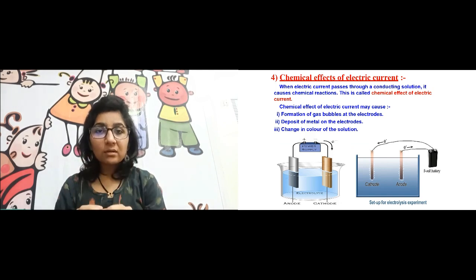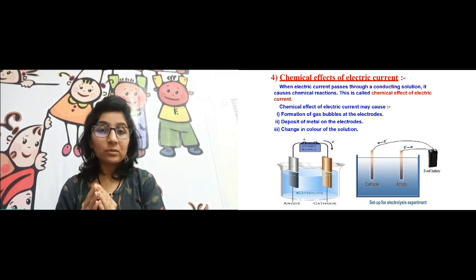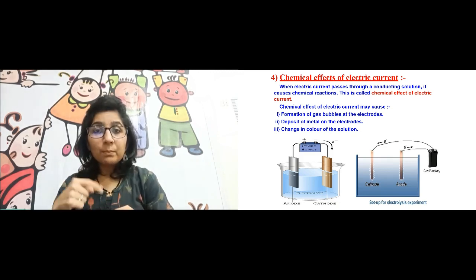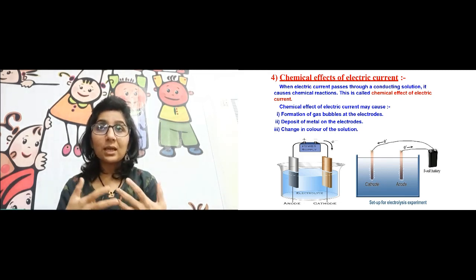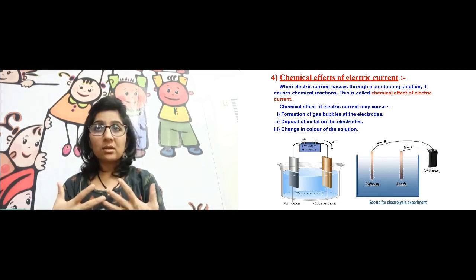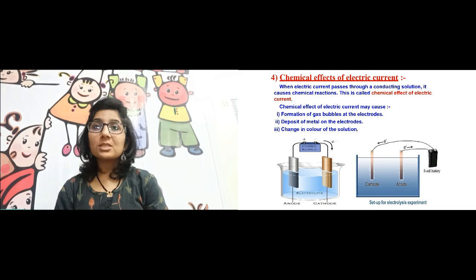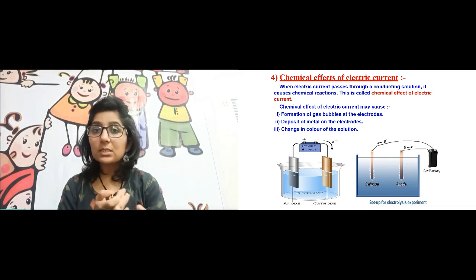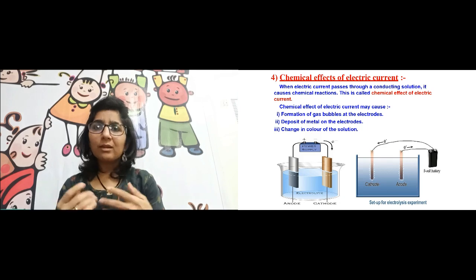When a liquid conducts electricity, that brings about some chemical changes. Fix in your mind: any liquid which can conduct electricity is called an electrolyte. This electrolyte brings about certain chemical changes in the liquid because of the electricity, and hence that is called the chemical effects of electric current. So when electric current is passed through a conducting solution it causes some chemical reactions — that is the chemical effect of electric current.